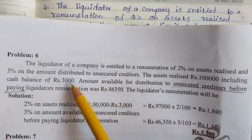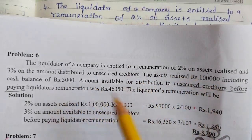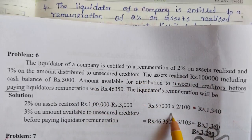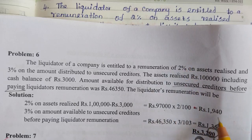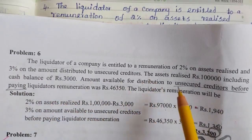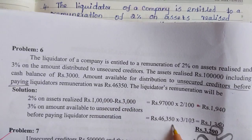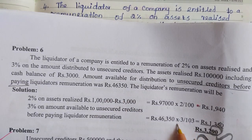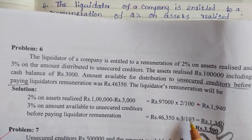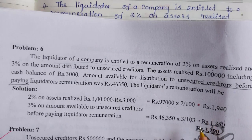Asset realized less cash balance: Rs.1,03,000 minus Rs.3,000 = Rs.97,000. 2% on Rs.97,000 = Rs.1,940. For 3% on unsecured creditors: 46,350 × 3/103 = Rs.1,350. Total liquidator remuneration = Rs.1,940 + Rs.1,350 = Rs.3,290.